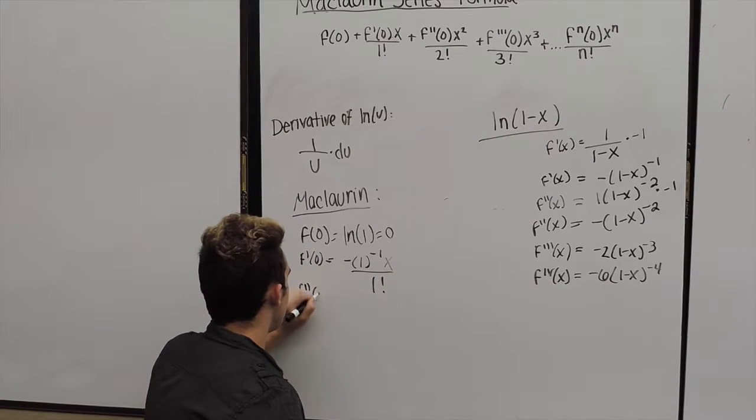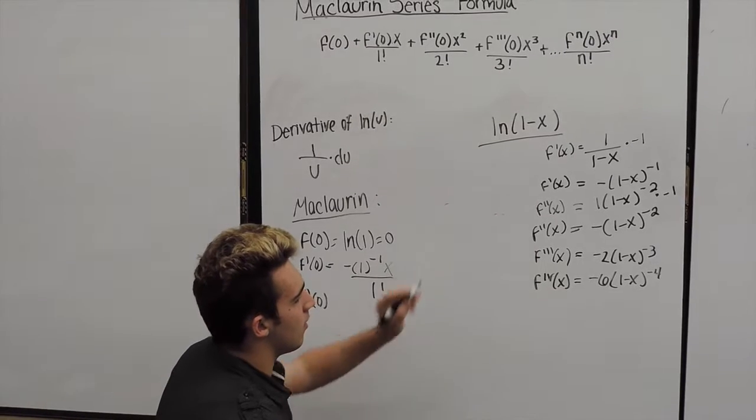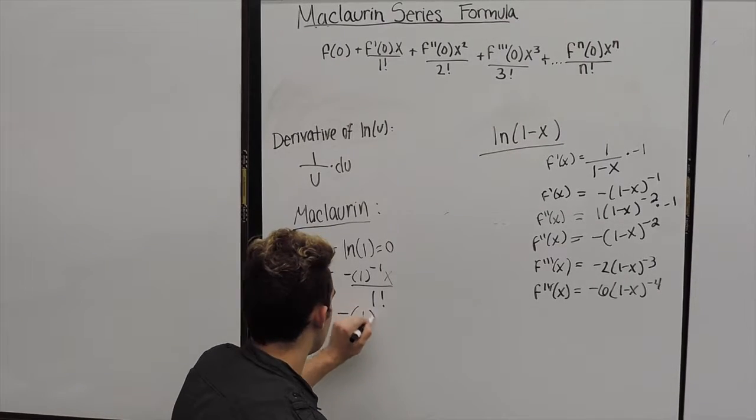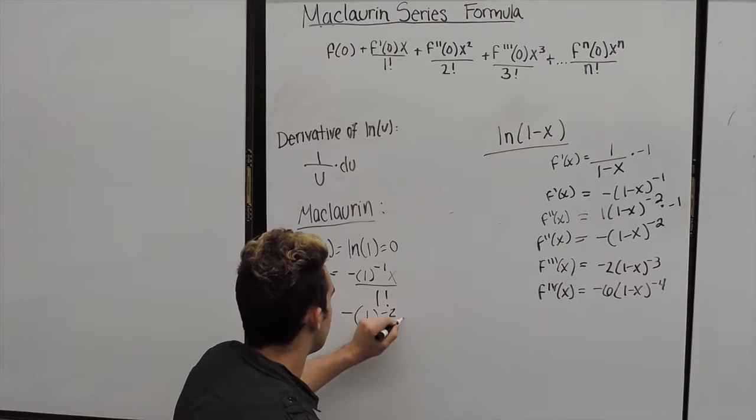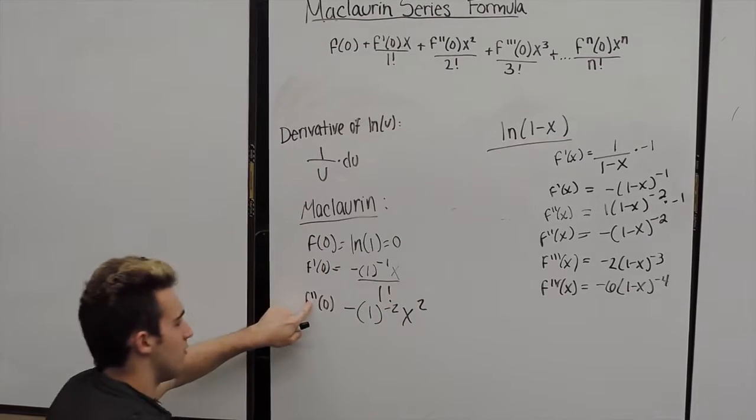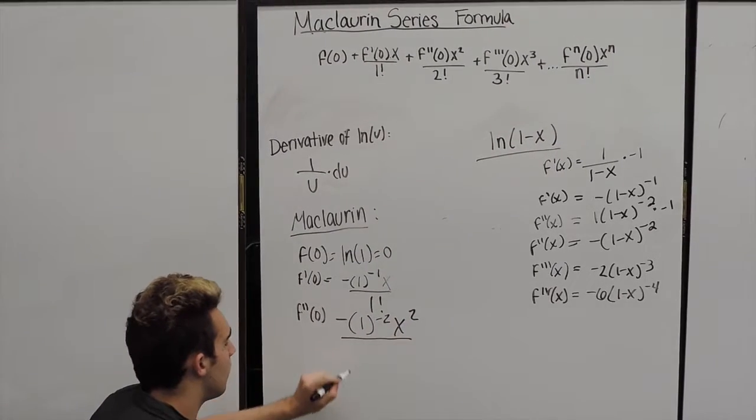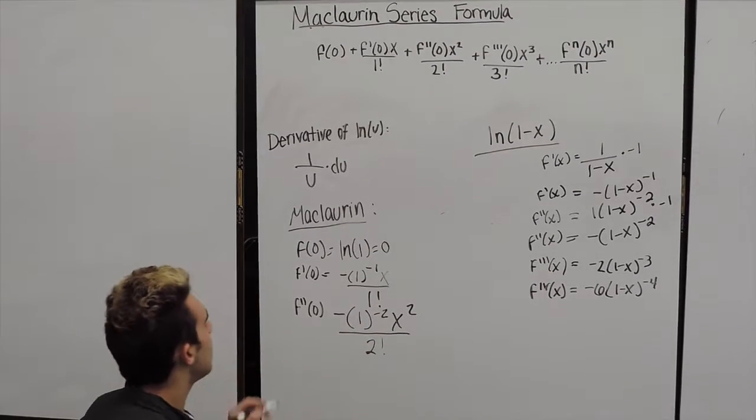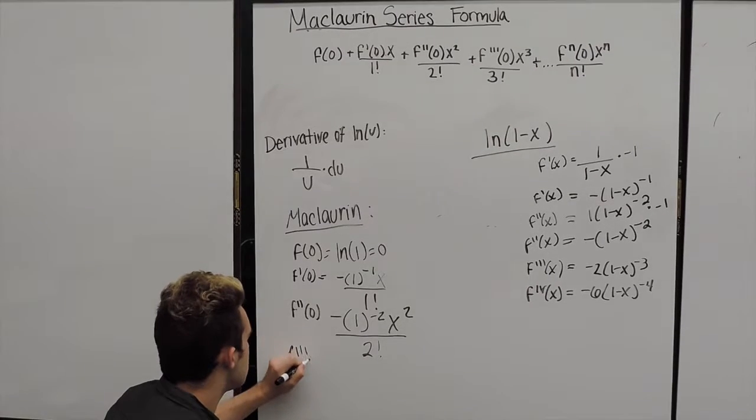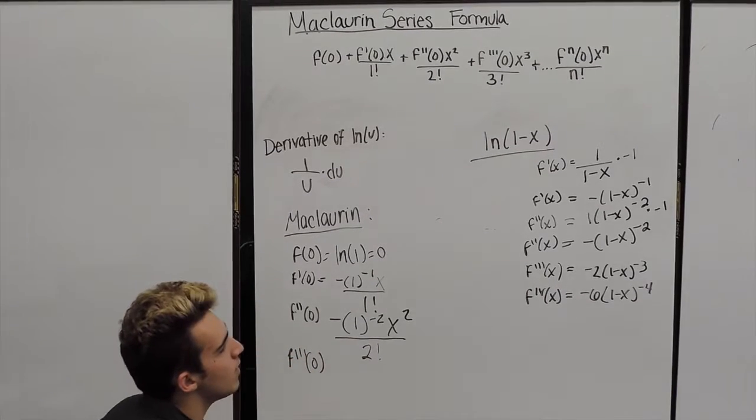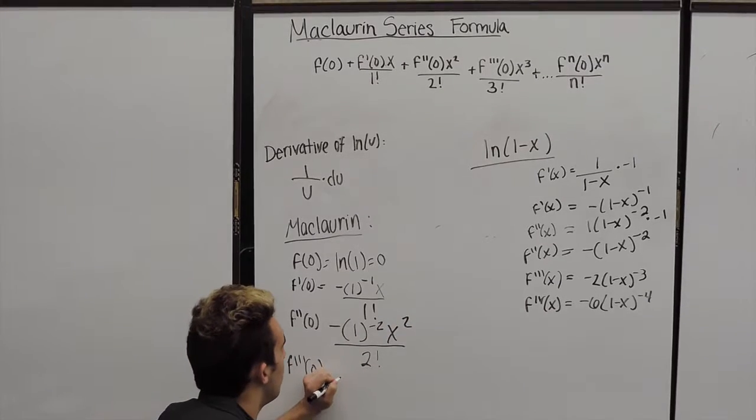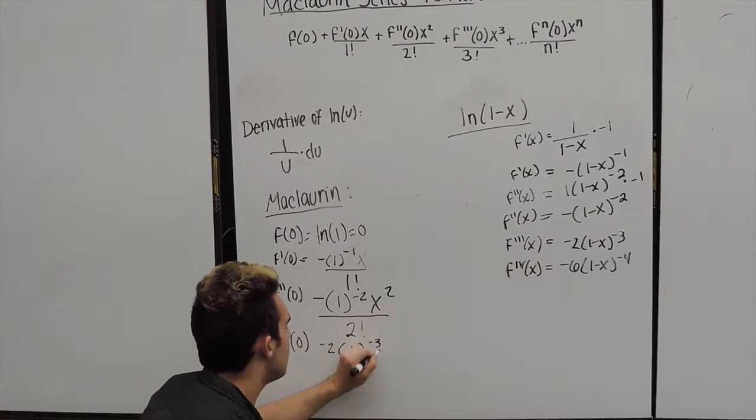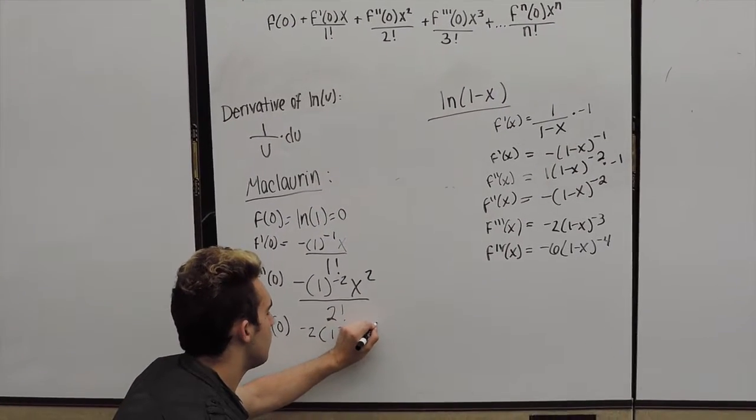That double prime, continuing, we have our negative 1 again, multiply by 1 minus 0 to the negative 2. Remember that x squared now, we want that x to be squared, and we want our denominator to be 2 factorial. And we'll do one more, f triple prime of 0. We have our negative 2, 1 minus x to the negative 3, x to the third power over 3 factorial.